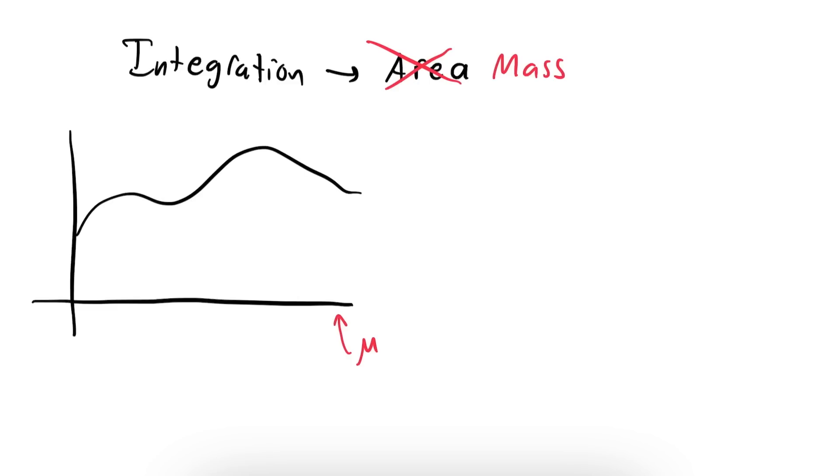Now, if we define a function on this new weighted real line, we can define its integral as simply the mass of the region under the curve, where we assume that the region has a uniform density in the y direction, and a density prescribed by μ in the x direction.